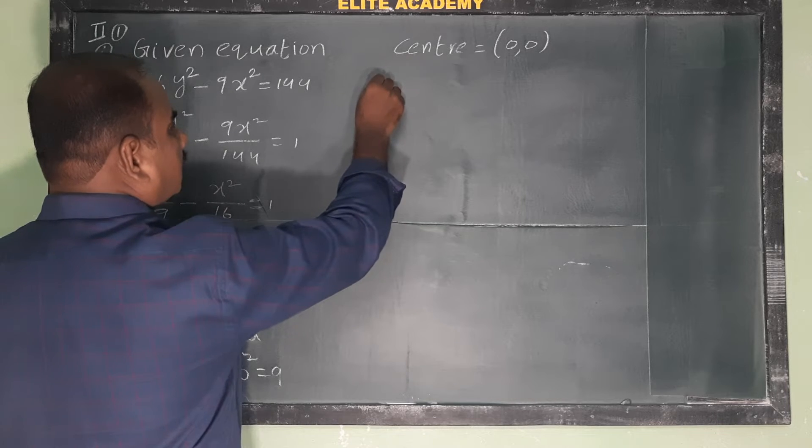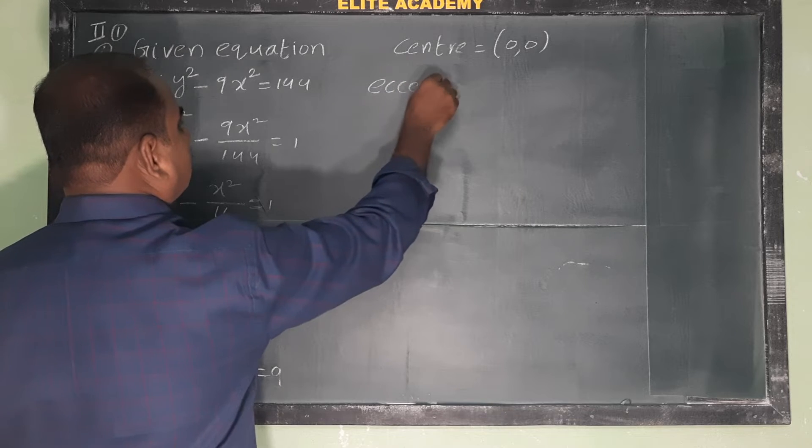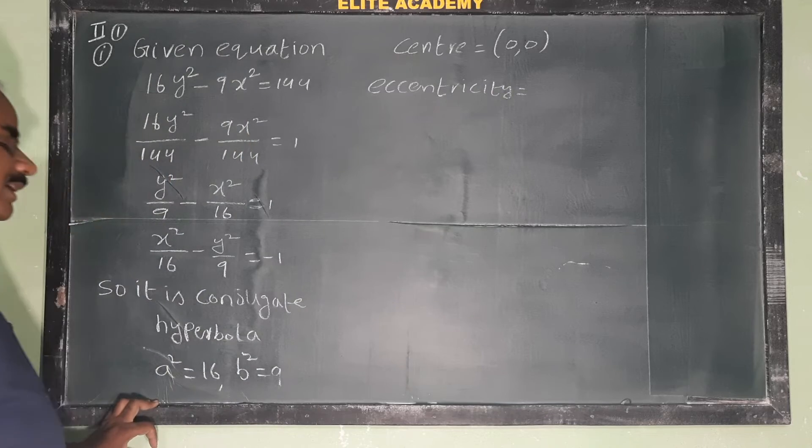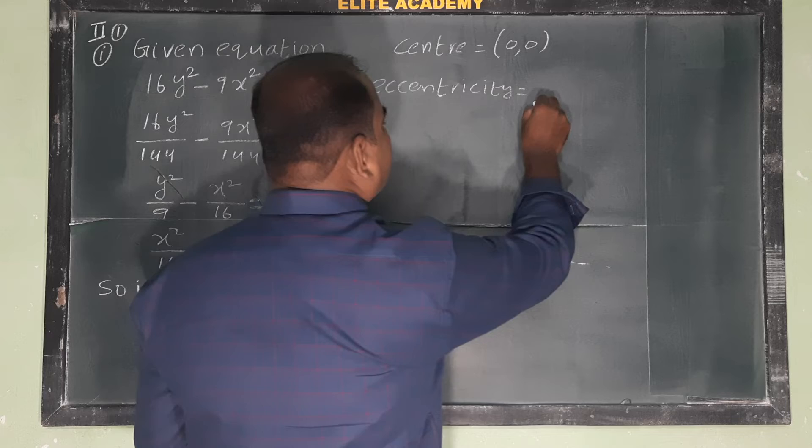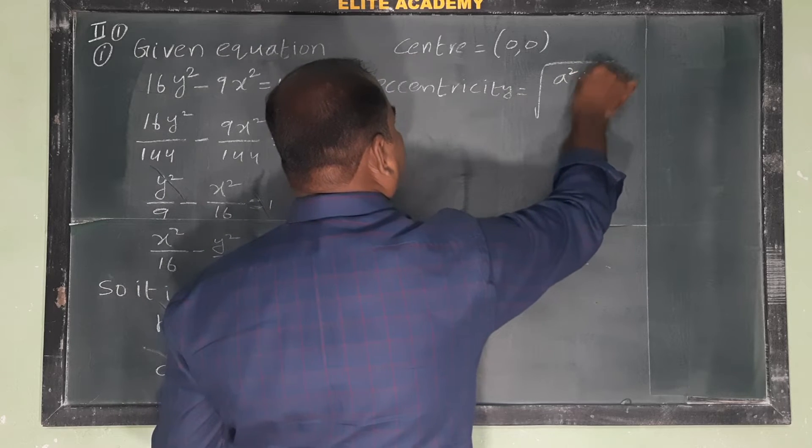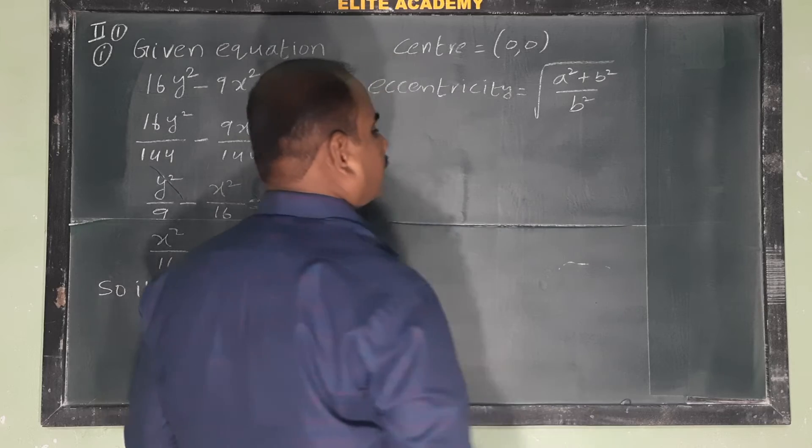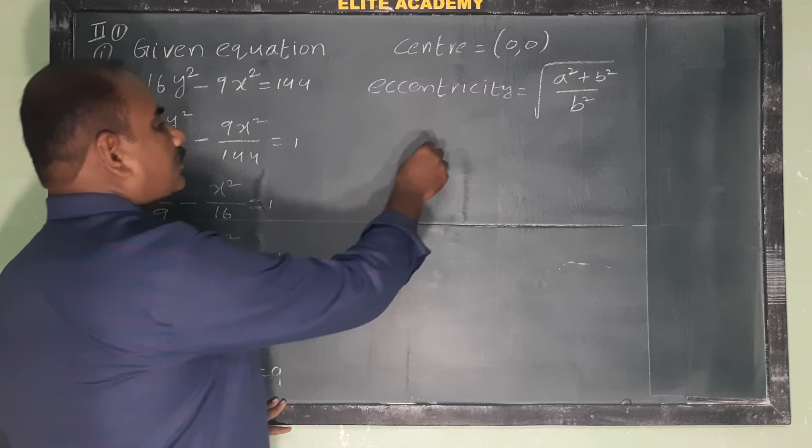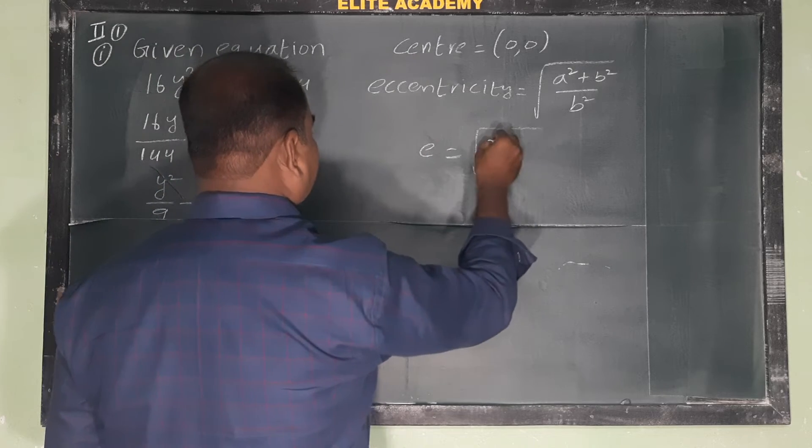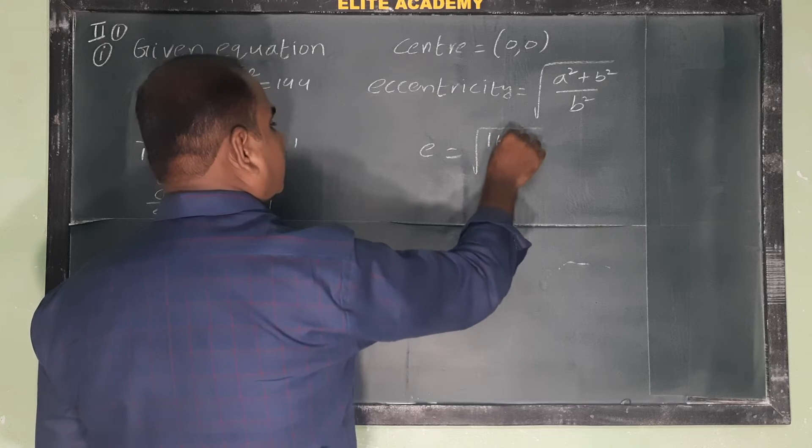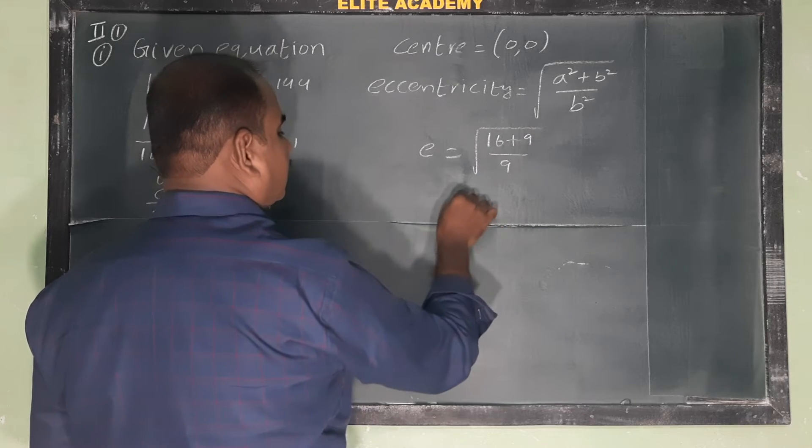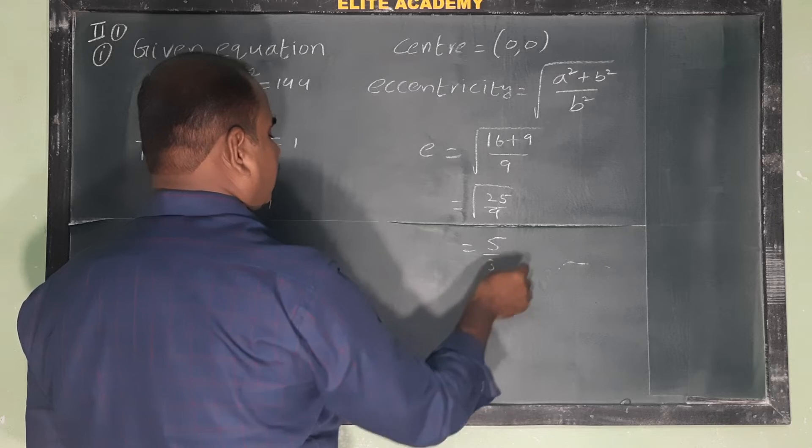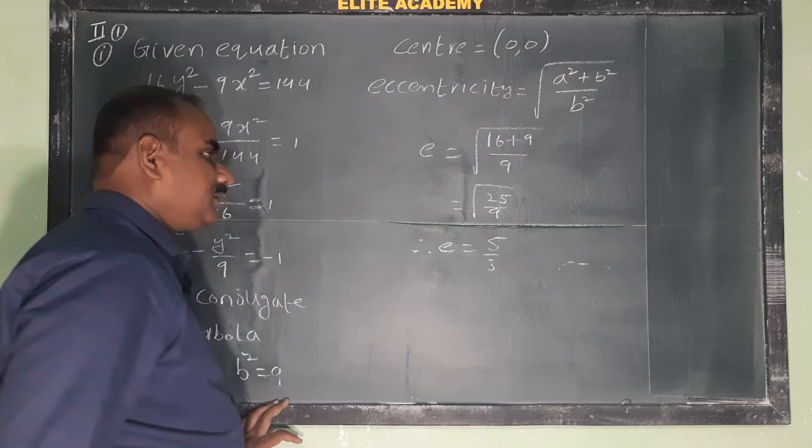Now calculating eccentricity. For conjugate hyperbola, eccentricity E = √(a² + b²)/b². So E = √(16 + 9)/9 = √(25/9) = 5/3. This is the eccentricity.